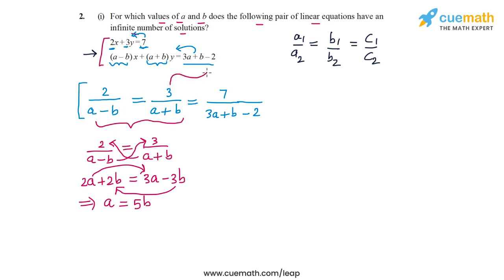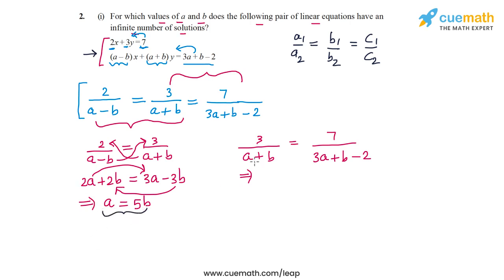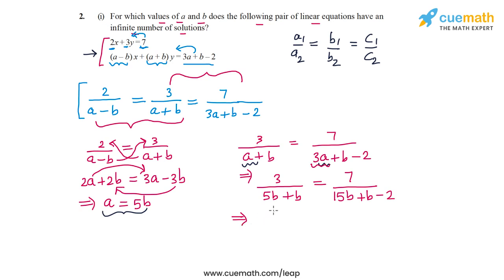Now let's use the next pair of equalities to create another relationship in A and B. We have 3 by (A plus B) equal to 7 by (3A plus B minus 2). From the first equality we already have A equal to 5B, so let's substitute A = 5B: we get 3 by (5B plus B) equal to 7 by (15B plus B minus 2), which simplifies to 3 by 6B equal to 7 by (16B minus 2).